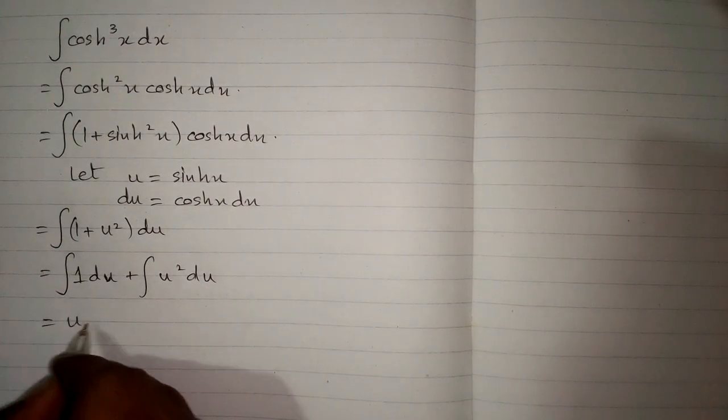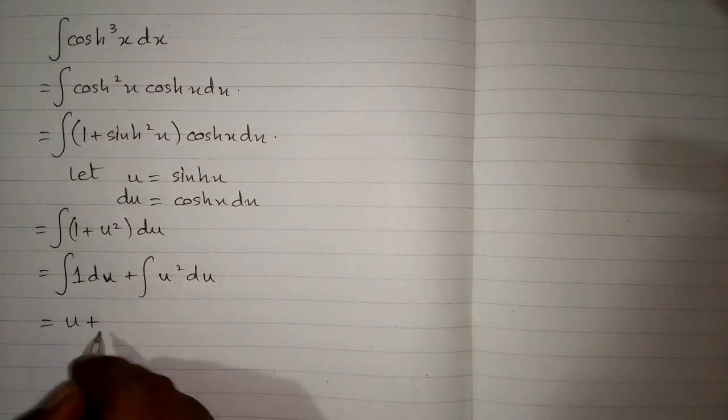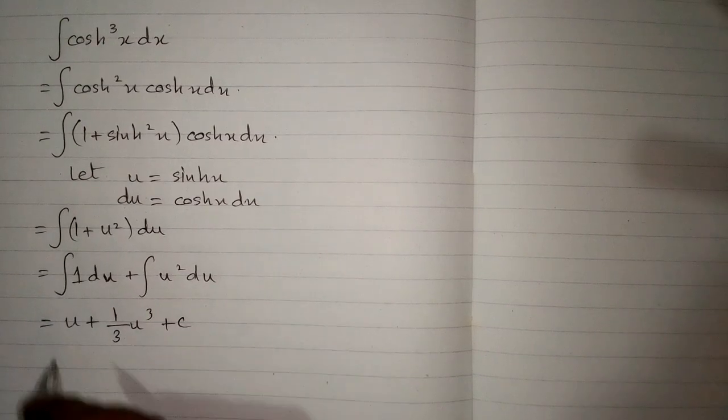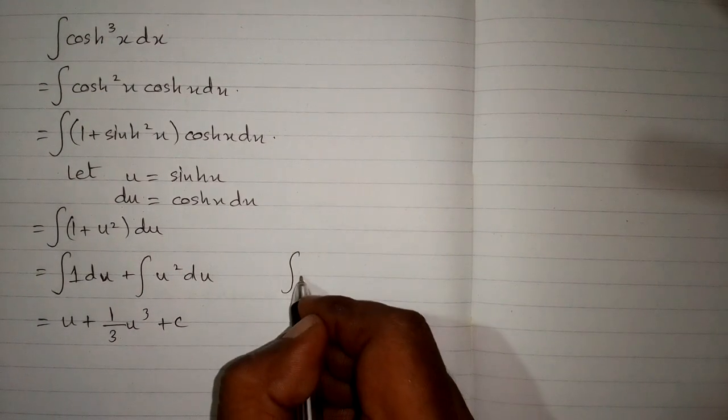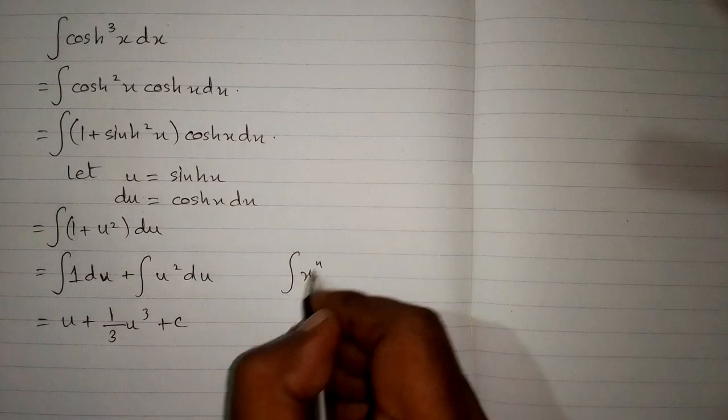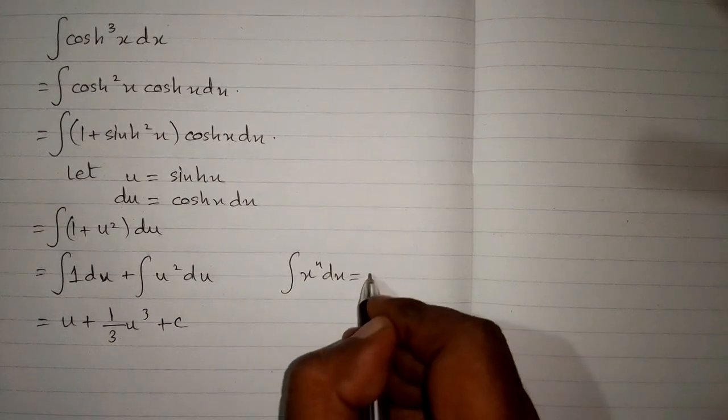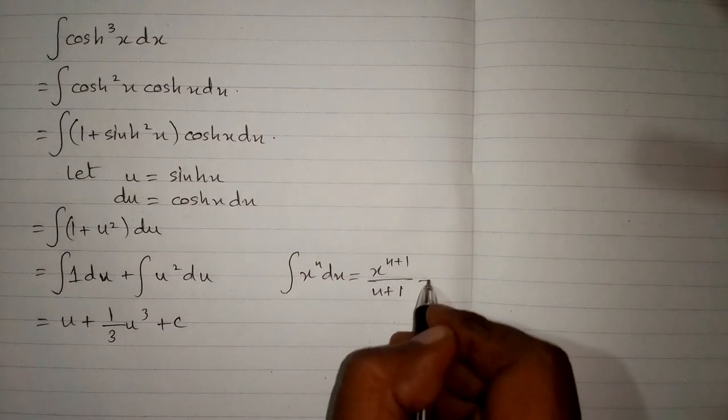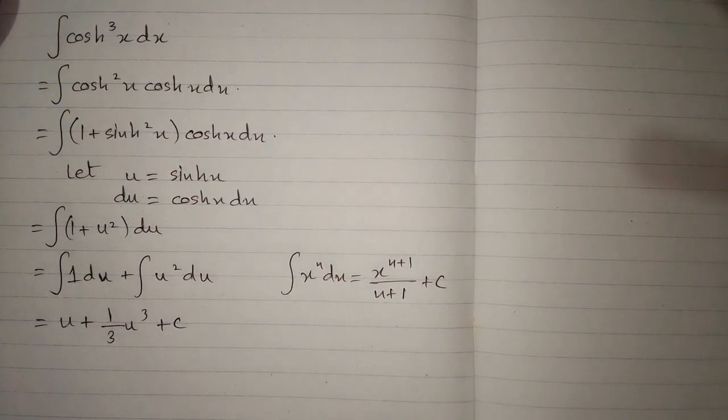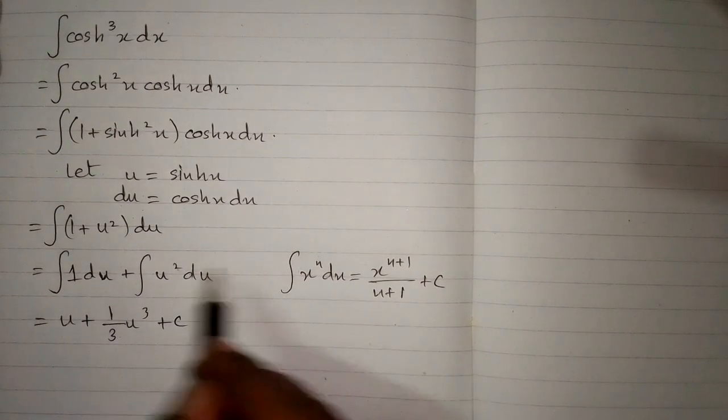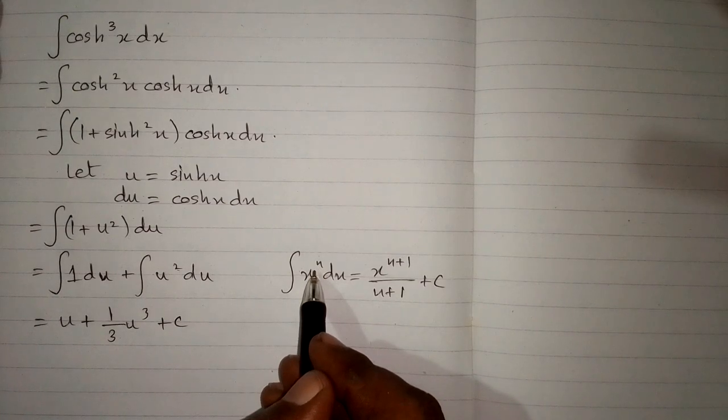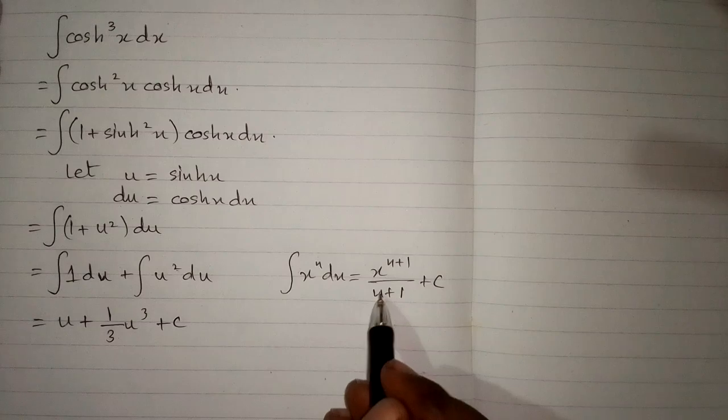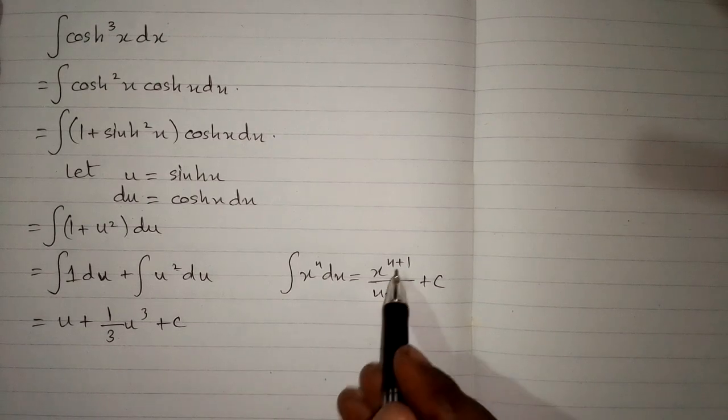By using the power rule of integration, which is integral of x to the power n equals x to the power n plus 1 upon n plus 1 plus c, we have 2 in place of n, so we will add 1, giving us 2 plus 1 in both the power and the denominator, resulting in u raised to the power 3 and 1 upon 3.